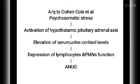Psychosomatic factors such as stress also predispose to ANUG. According to Cohen et al., psychosomatic stress leads to activation of the hypothalamus-pituitary-adrenal axis, which elevates serum and urine cortisol levels, depresses lymphocyte and PMN function, and leads to ANUG.